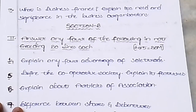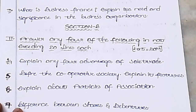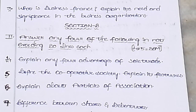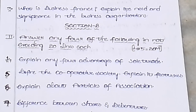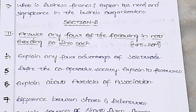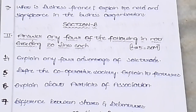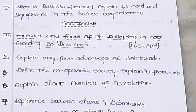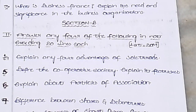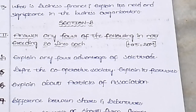Section B: Answer any four of the following. Explain the advantages of sole trader. Explain cooperative society and its features. Explain the Articles of Association. Explain the difference between shares and debentures. Explain sources of short-term finance. Explain any five advantages and disadvantages of MNCs.